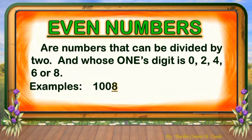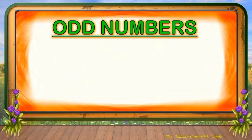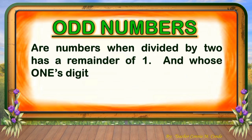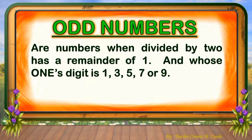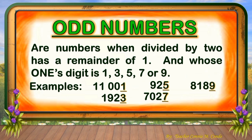Examples of even numbers: 1008, 9926, 1020, 724, and 182. If you will notice, the one's digits are 8, 6, 0, 4, and 2. Odd numbers are numbers when divided by 2 that have a remainder of 1, and whose one's digit is 1, 3, 5, 7, or 9. Examples: 11,001; 1,923; 925; 7,027; and 8,189. If you will notice, the one's digits are 1, 3, 5, 7, and 9.